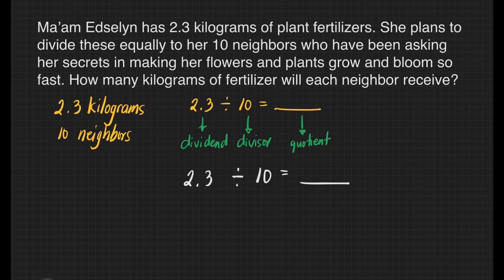Our trick here is when a whole number or a decimal is divided by 10, 100, or 1000, the decimal point is moved 1, 2, and 3 places respectively to the left.